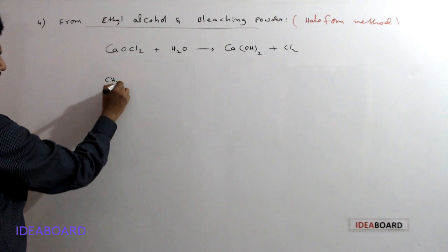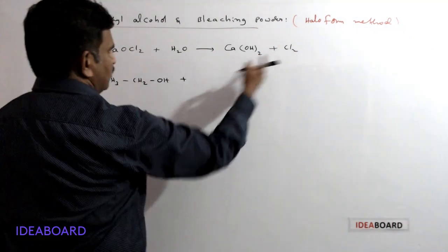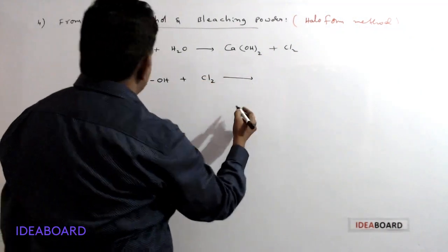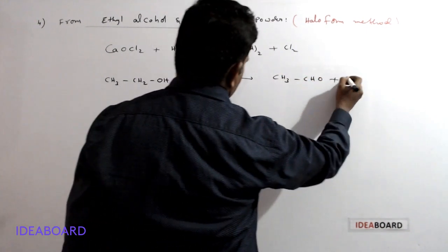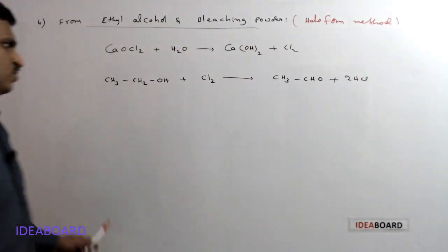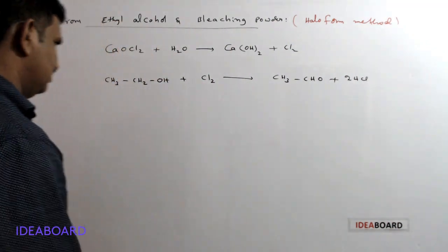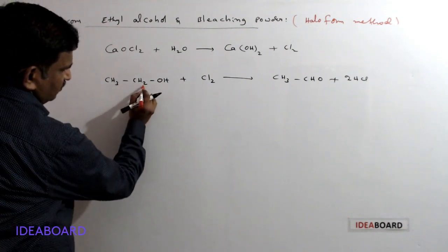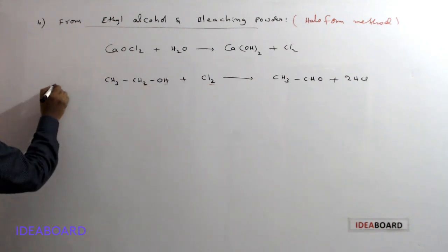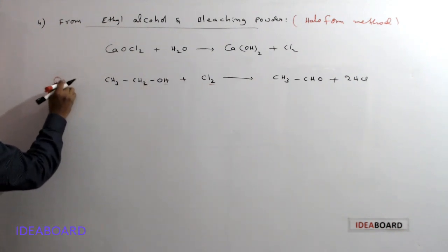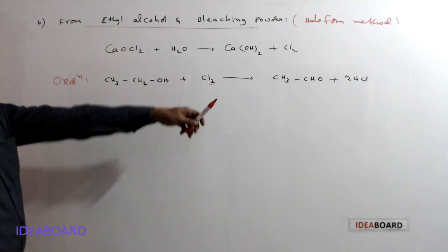First, ethyl alcohol (CH3CH2OH) reacts with chlorine (Cl2) and gives CH3CHO plus 2 HCl. In this process, 2 hydrogen atoms and 2 chlorine atoms are removed, and this reaction is called the oxidation process because removal of hydrogen occurs.